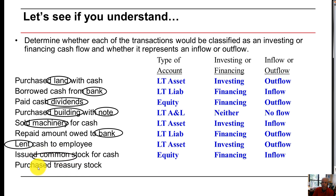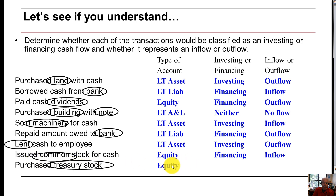Purchasing treasury stock — remember, treasury stock is a contra stockholders' equity account. Since we purchased it, we know it's equity, so it's financing. And since we purchased it, we used our cash — cash went out to repurchase our stock, so it's an outflow.